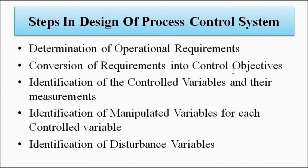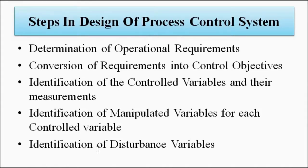The next step is identification of the controlled variables and their measurement — the output parameters we want to control. These are the controlled variables, and the variables through which we control the output are the manipulated variables on the input side. There should be at least one manipulated variable for each controlled variable. In some control mechanisms, disturbance variables — unnecessary inputs that affect the process — are also taken into account.